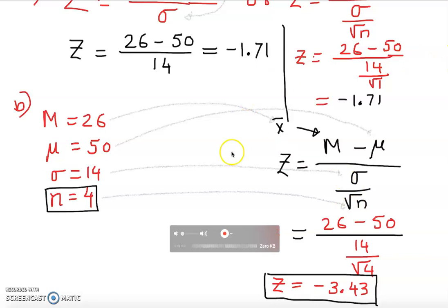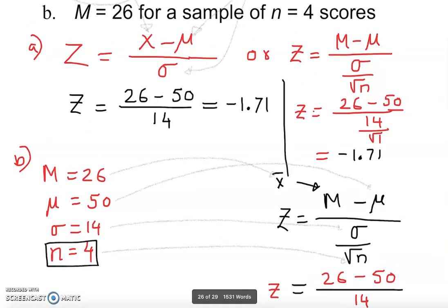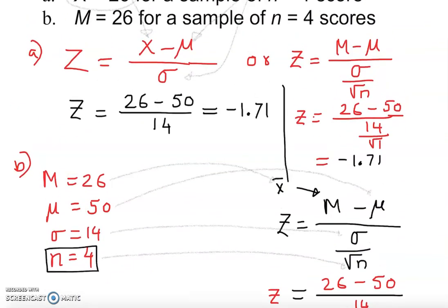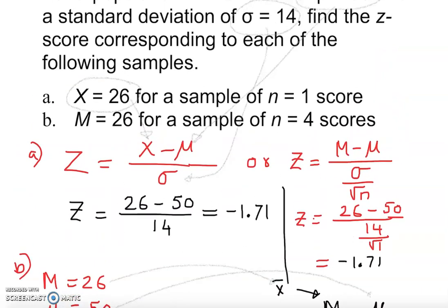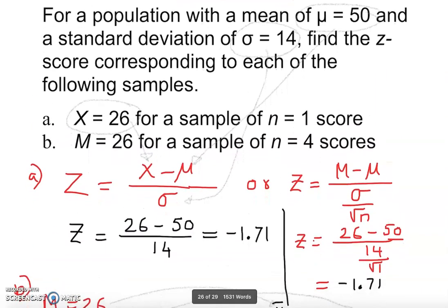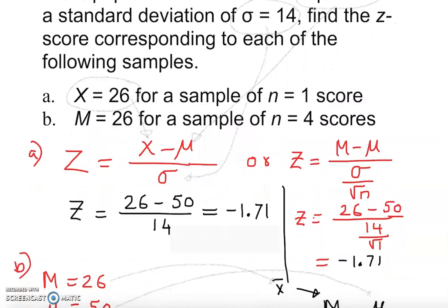You can check it out whether you have the same calculation or not. This is how we find z-score when given sample is more than one. You can try if the answer becomes the same or not using the same formula. Obviously, we cannot do that because we have more than one sample. You can do a similar problem from your textbook. Thank you.